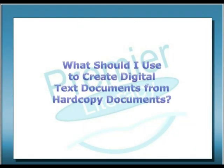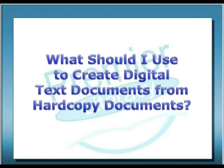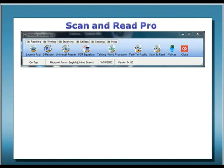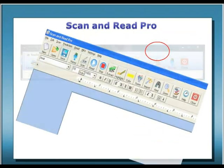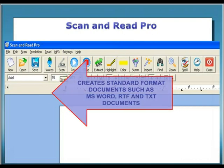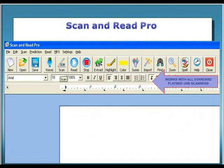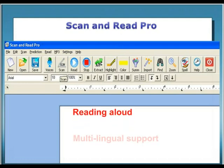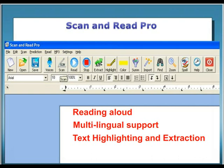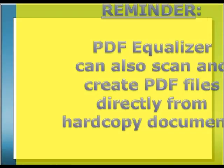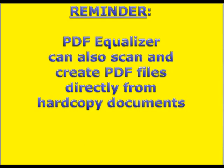What should you use to create digital text documents from hard copy documents such as books and magazines? Scan and Read Pro is a fully powered scanning application that gives you the capability to scan hard copy documents and create electronic documents in industry standard formats such as Microsoft Word, RTF, and TXT. Scan and Read Pro works with virtually all flatbed USB scanners — the only requirement is that the scanner must be USB-enabled and Twain-compliant, which is typically the standard for all brand name scanners. It comes complete with features such as voice capabilities for reading aloud, multilingual support, text highlighting and extraction, and text summarization. Additionally, remember that our PDF Equalizer product also includes sophisticated text scanning features that allow you to convert hard copy documents directly into a PDF file format.